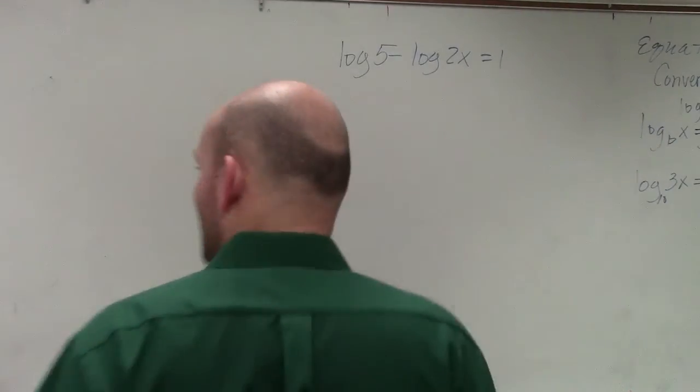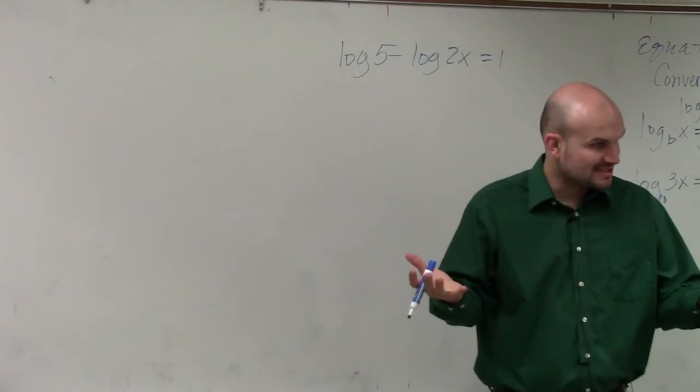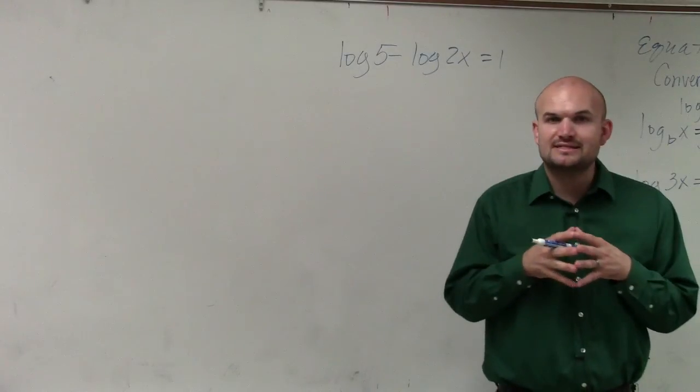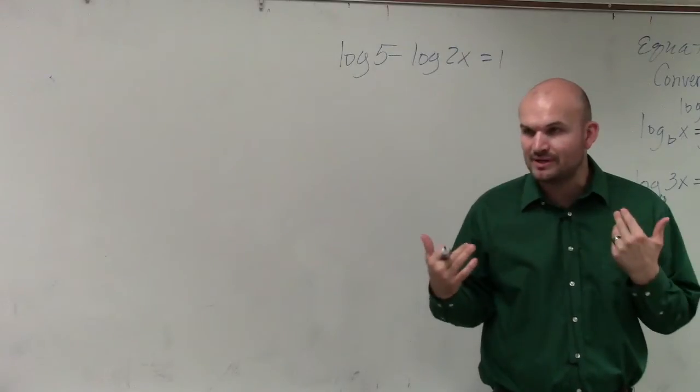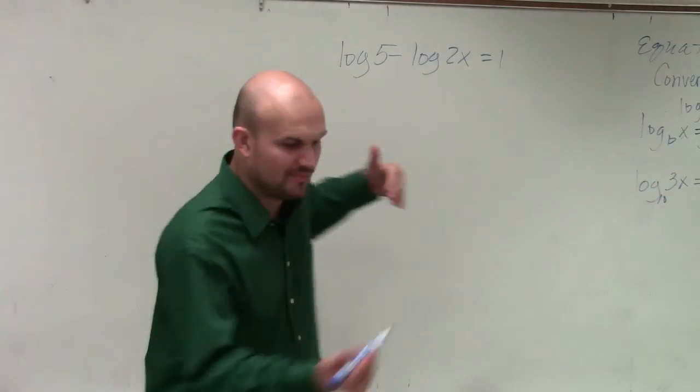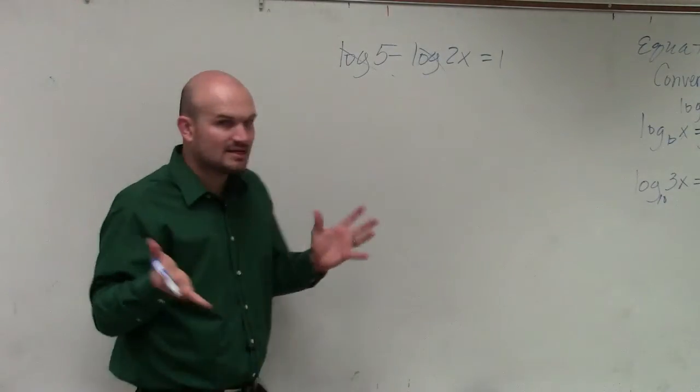All right, so I wanted to go over a problem like this because this is where a lot of students make mistakes. A lot of students make mistakes because they want to use the one-to-one property. So any time they see more than one logarithm, they want to go, oh, let's just cancel them out. Well, no, that doesn't work.